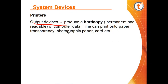Photographic paper is paper coated with a light-sensitive chemical formula used for making photographic prints. When photographic paper is exposed to light, it captures a latent image that is then developed to form a visible image. The light-sensitive layer of the paper is called the emulsion.